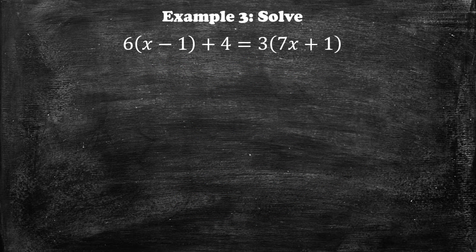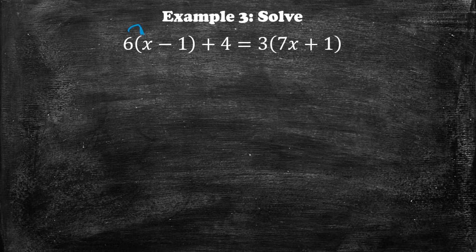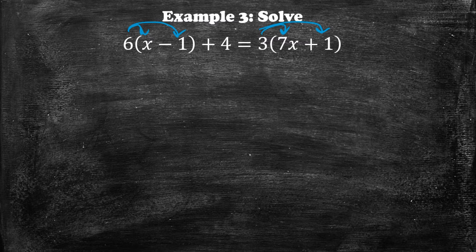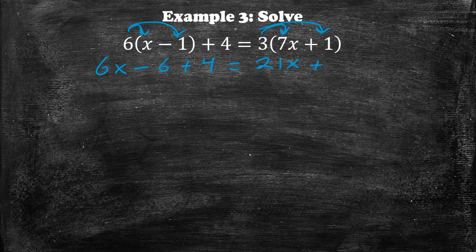Example number 3, we want to solve this equation. When we look at it, we see that there are some parentheses. So first, let's simplify by multiplying whatever's on the outside of the parentheses to what is on the inside. When we do that, we get 6x minus 6 plus 4 is equal to 21x plus 3.